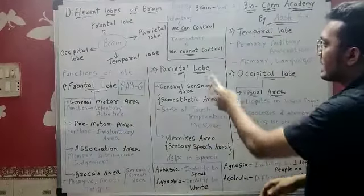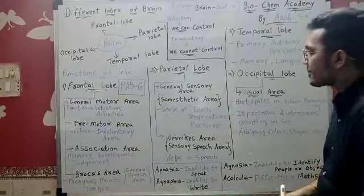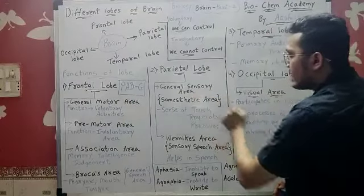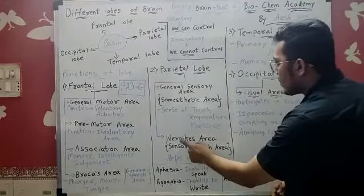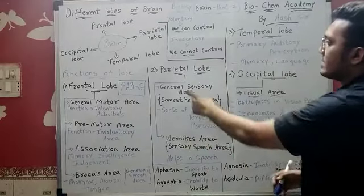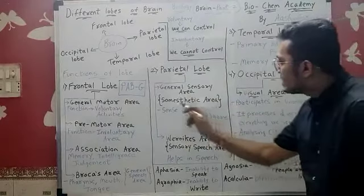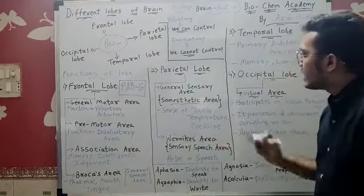The next lobe is parietal lobe. There are two areas: general sensory area and Wernicke's area. General sensory area is also called somesthetic area. What does that mean? Somesthetic area.